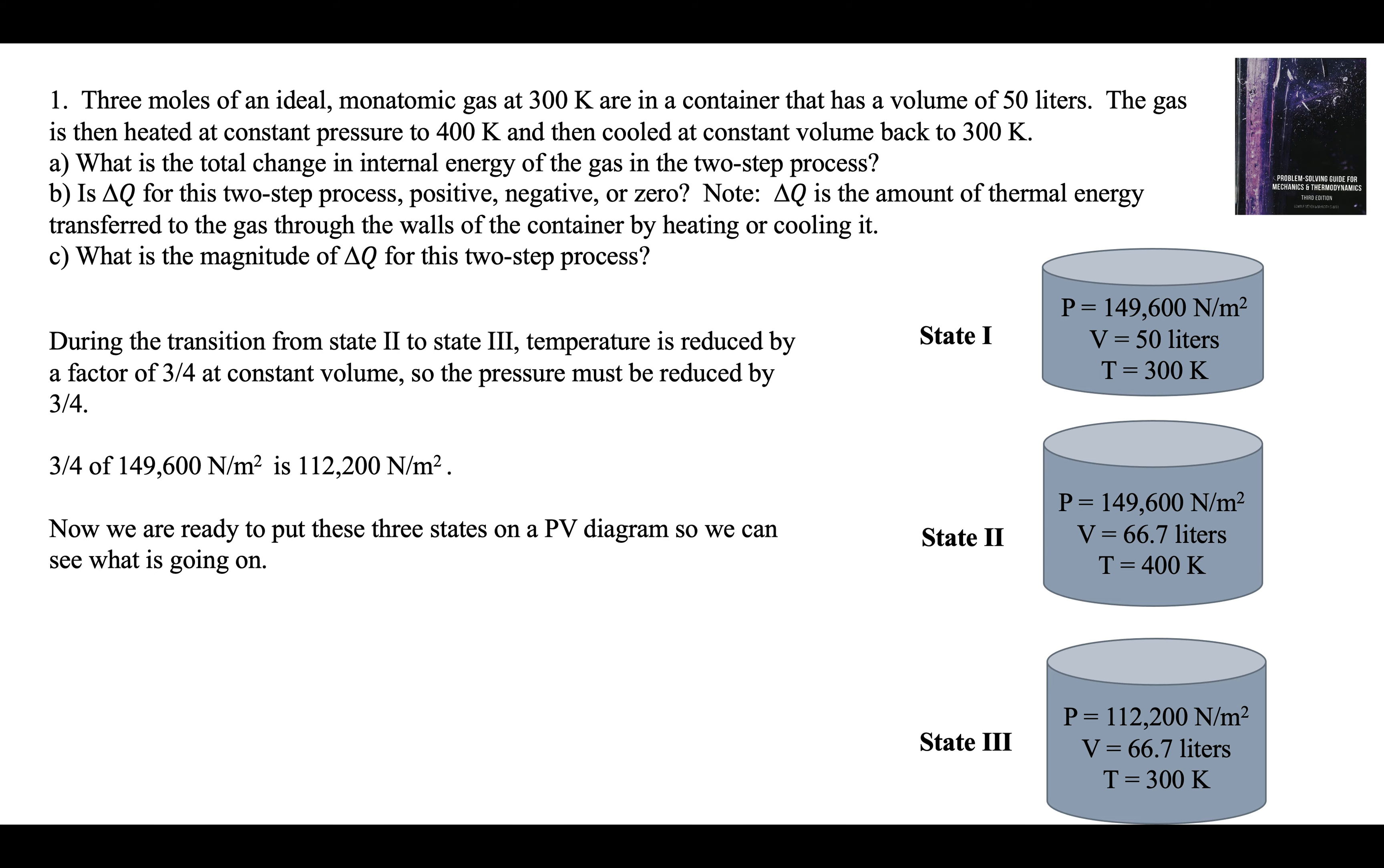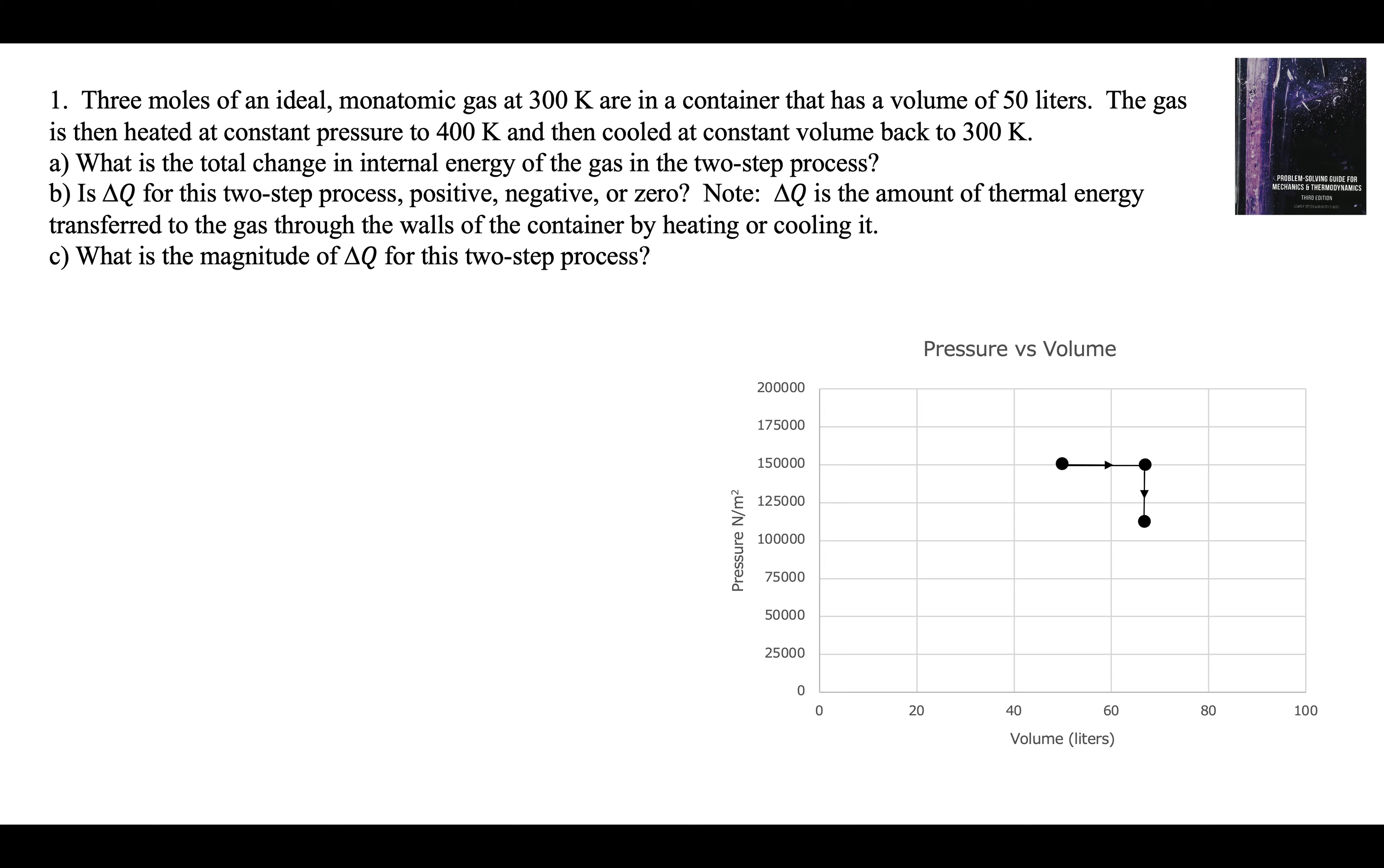So now we're ready. We have the three states. We can put them on a PV diagram so we can see what's going on. Pressure versus volume. So here's the initial state. 50 liters, 149.6, right there. We heat it at constant pressure. It expands. Pressure stays the same. It's horizontal to 66.7 liters. That's 400 kelvins.